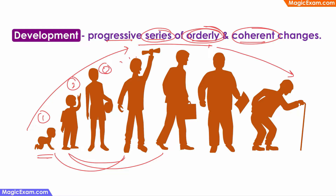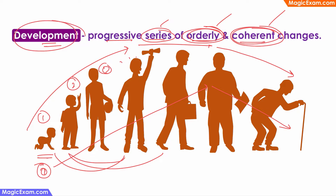There is a specific order that needs to be followed in any kind of development. If the changes are orderly and there is a specific series, it means the changes are coherent and predictable. For example, in cognitive development, every person starts at level 0 as a child, then cognitive development happens up to a particular age, after which cognitive abilities start declining. So if development is a series of steps that are orderly, coherent, and predictable, then principles can be developed around the concept of development. These principles which help us identify or predict what kind of changes will happen are the principles of development.